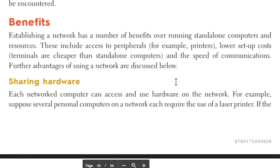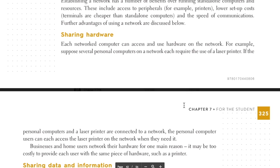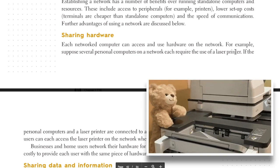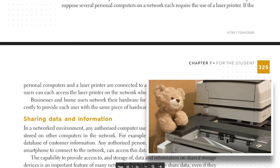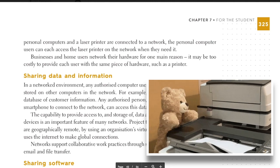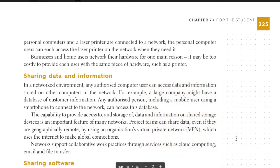Hardware sharing: each networked computer can access and use hardware on the network. For example, if several personal computers on a network each require the use of a laser printer, and the computers and printer are connected to a network, each user can access the laser printer when they need it. Businesses and home users network their hardware for one main reason — it may be too costly to provide each user with the same piece of hardware, such as a printer.